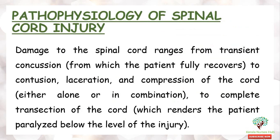The pathophysiology of spinal cord injury: damage to the spinal cord ranges from transient concussion, from which the patient can fully recover, to contusion, laceration, and compression of the cord, which can happen either alone or in combination. In some cases, this can lead to complete transection of the cord, which renders the patient paralyzed below the level of injury.